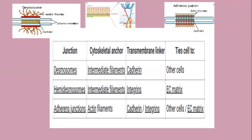Desmosomes tie one cell to another cell using anchoring intermediate filaments. There are two types of anchors used: one is the cytoskeletal anchor, which is the intermediate filament, and the other is the transmembrane anchor, which is cadherin. Together they make cell-to-cell connections.